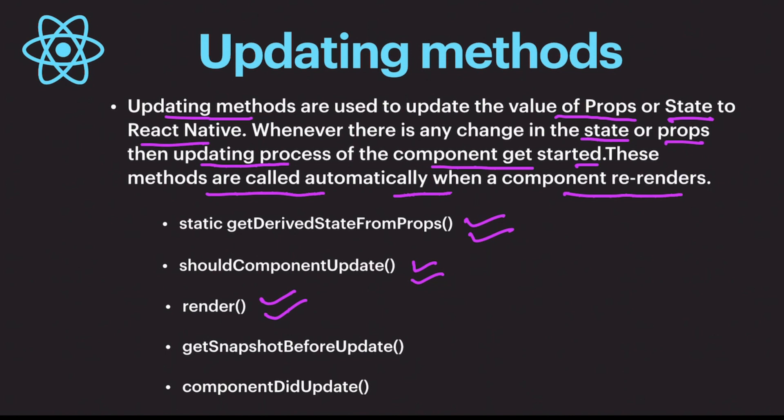The second-to-last method is `getSnapshotBeforeUpdate`. This method is only for the updating methods and is used when we want to capture any previous state or previous props. The last method is `componentDidUpdate`, which is called when we update anything in the component.